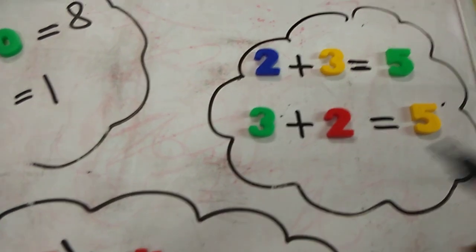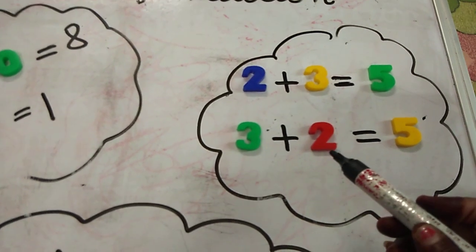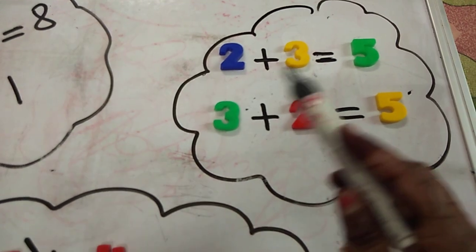Now, second, order of the addends doesn't matter. Addends means the two numbers which we are adding.